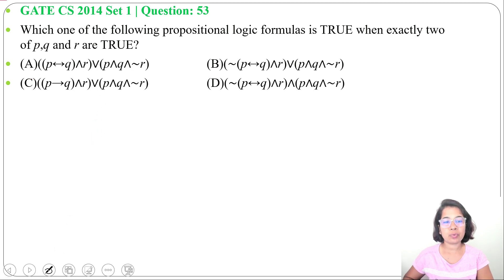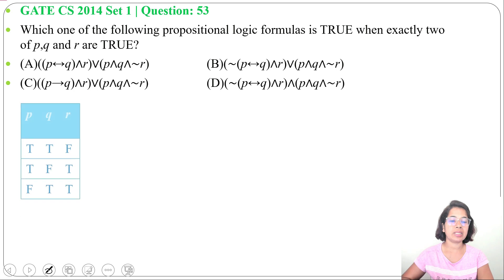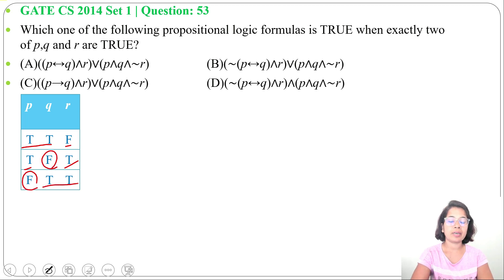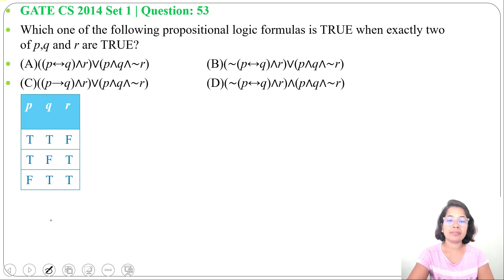Exactly two of P, Q and R are true means either P and Q are true with R false, or P and R are true with Q false, or Q and R are true with P false. We'll just check for these three possibilities, and for which logic formula the truth value is true, that will be the answer.